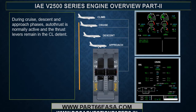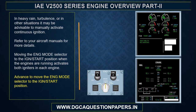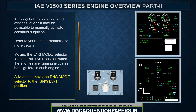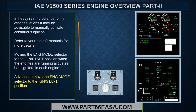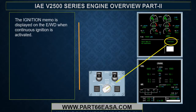During cruise, descent, and approach phases, autothrust is normally active and the thrust levers remain in the climb detent. In heavy rain, turbulence, or other situations, it may be advisable to manually activate continuous ignition — refer to your aircraft manuals for more details. Moving the engine mode selector to the ignition start position when the engines are running activates both igniters in each engine. The ignition memo is displayed on the EWD when continuous ignition is activated.